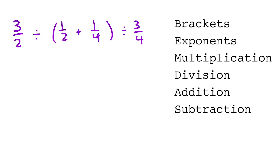In today's video, we're going to look at how some big questions with BEDMAS look, particularly when we have fractions involved. In this first question, which is 3 over 2 divided by a pair of brackets containing one half plus one quarter, and that gets divided by 3 quarters.